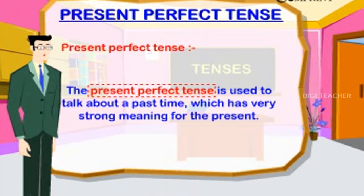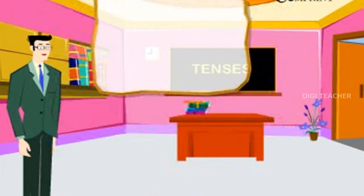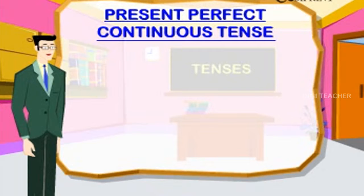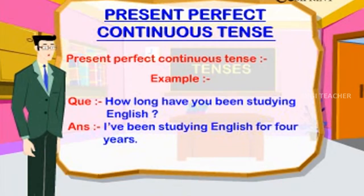Present Perfect Tense: used to talk about a past time that has strong meaning for the present. Example: 'Where is Julie?' — 'She has gone out; she should be back in an hour.' Present Perfect Continuous Tense: often used with 'for' or 'since' to describe how long something has been happening up to now. Example: 'How long have you been studying English?' — 'I have been studying English for four years.'